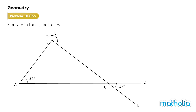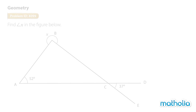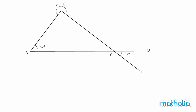Find angle X in the figure below. Angle BCA will be equal to 37 degrees. Reason: vertically opposite angles.